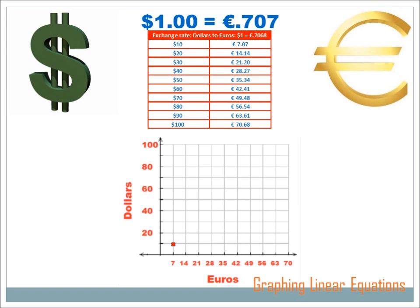Let's graph the second one. We've got twenty dollars equals 14.14 euros, so we'd go up to twenty dollars and then across to 14.04, a little bit past fourteen. The third one is thirty dollars equals 21.2 euros, so we'd go up to thirty dollars and over to about twenty-one. And there's that dot.